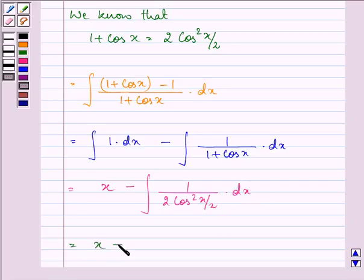Further, we have x minus 1 by 2. Now, 1 upon cos square x by 2 can be written as secant square x by 2 dx.